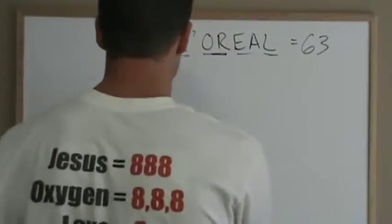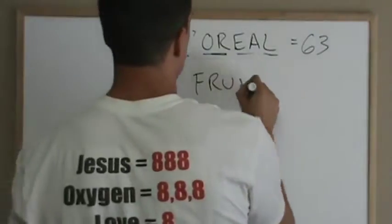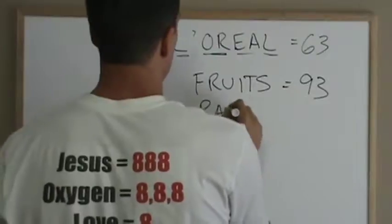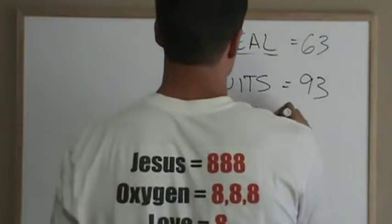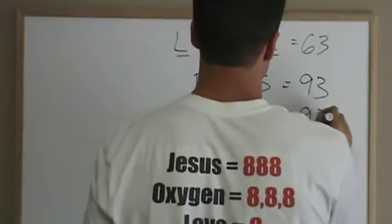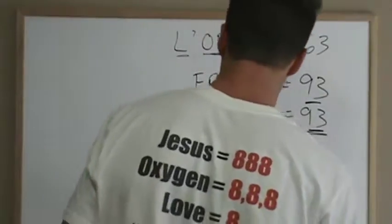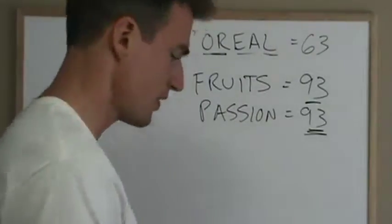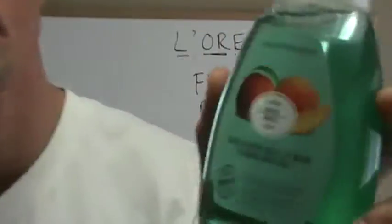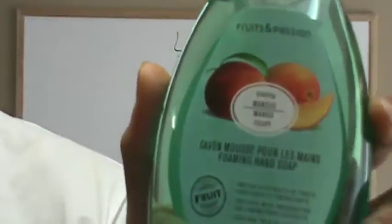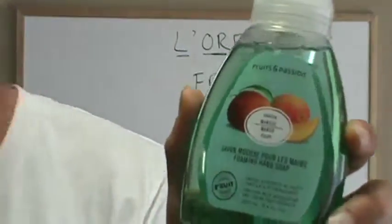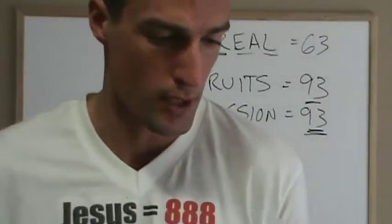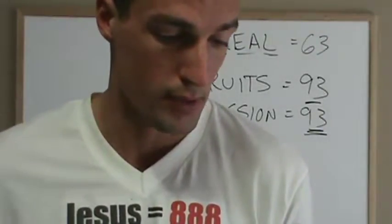But we are here to solve Fruits and Passion. Well, this is really easy. Because Fruits equals 93 and Passion equals 93. It's an obvious, obvious ordained gem of God for his mathematical pleasure. There you go.